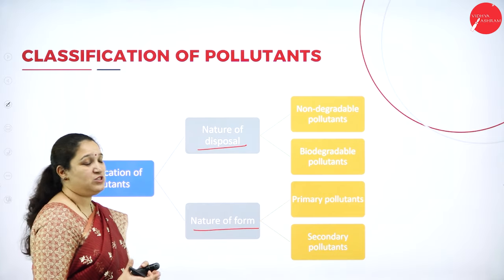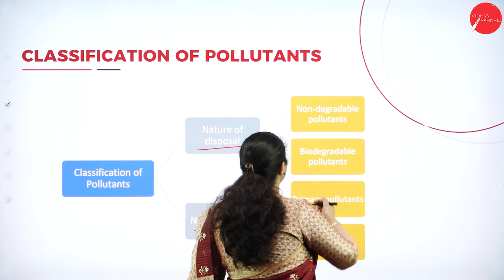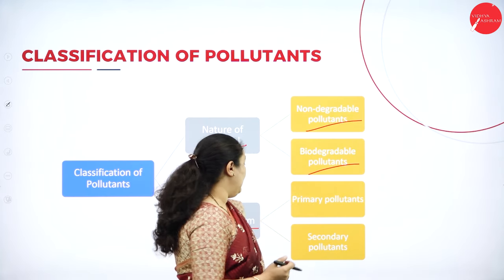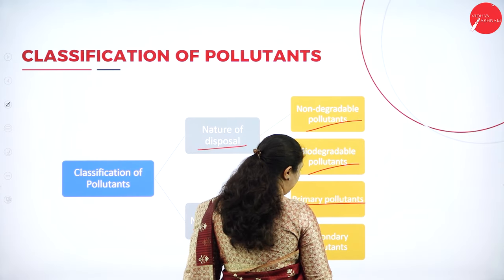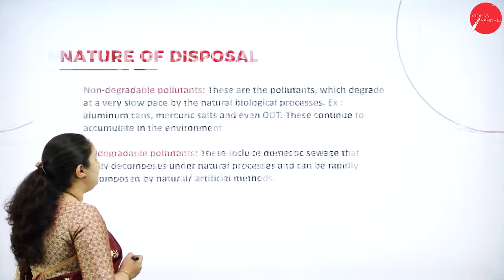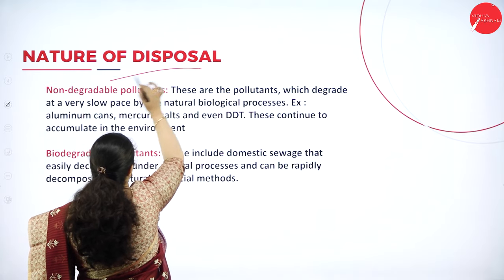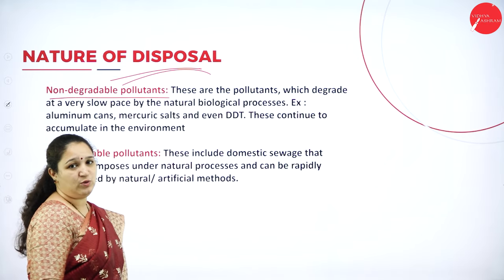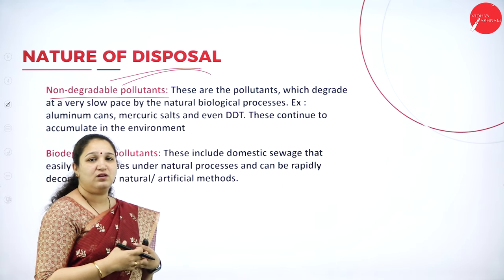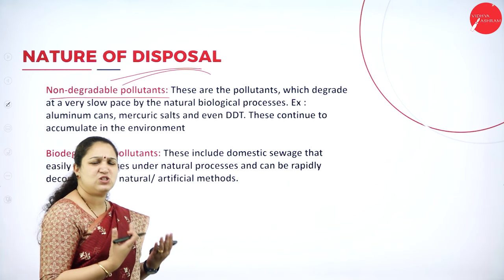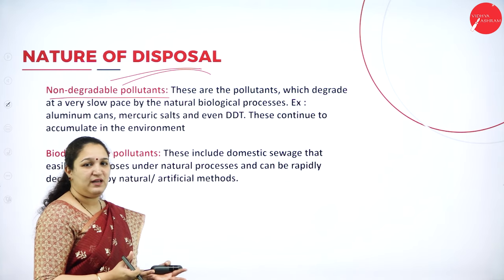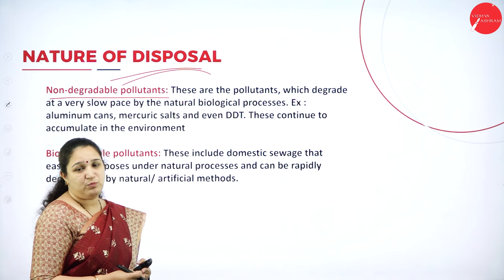Based on nature of disposal, pollutants can be non-degradable or biodegradable. Based on nature of formation, they can be primary or secondary pollutants. Non-degradable pollutants are those which cannot be degraded in nature easily — it is a very slow process. No microorganisms can decompose these materials, so we call them non-degradable pollutants.